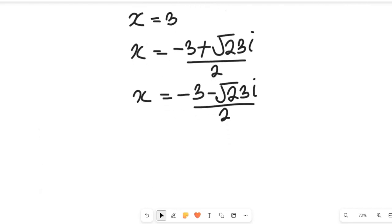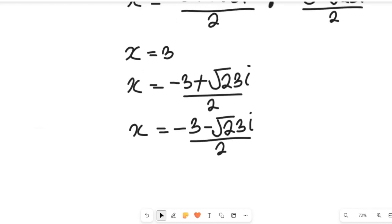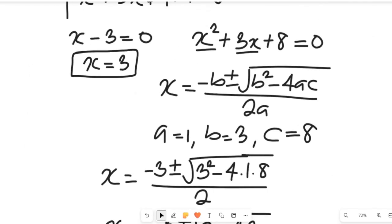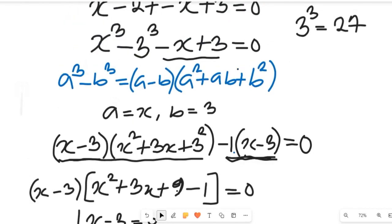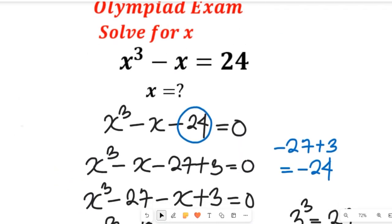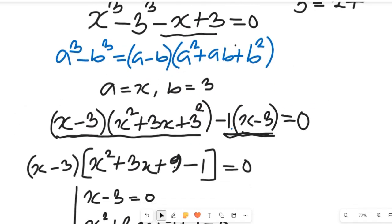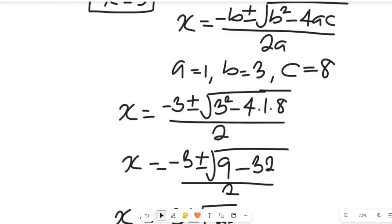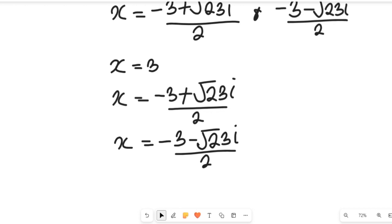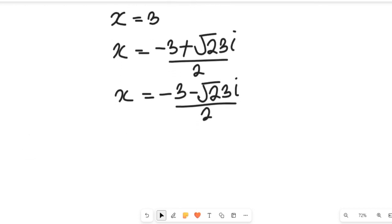So the complete solution to the polynomial equation is: x equals 3 (the only real solution), x equals (negative 3 plus square root of 23 imaginary) divided by 2, and x equals (negative 3 minus square root of 23 imaginary) divided by 2. The other two solutions are imaginary.